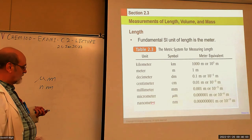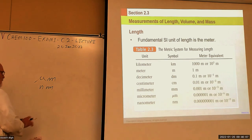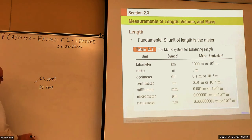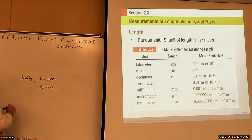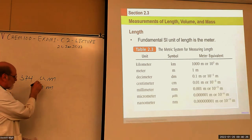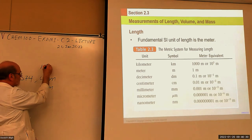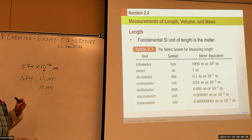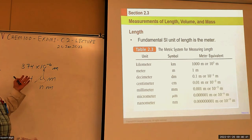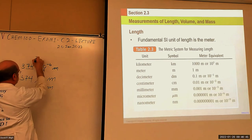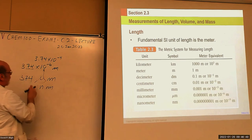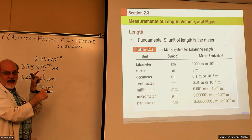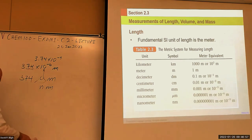Here's an example: if I measure something that is 374 micrometers and I want to know that in meters, I take the prefix value — micro is 10 to the minus 6 — so it's 374 times 10 to the minus 6 meters. Then if you want scientific notation, move the decimal: one, two places. So it becomes 3.74 times 10 to the minus 4, because you had a positive 2 here and a minus 6 — add them together, you get minus 4. That was a teaser for unit conversion.